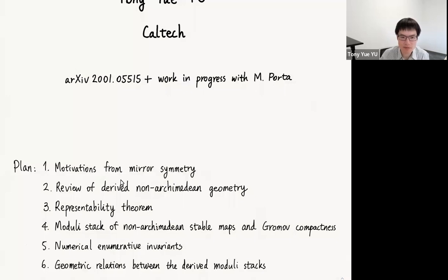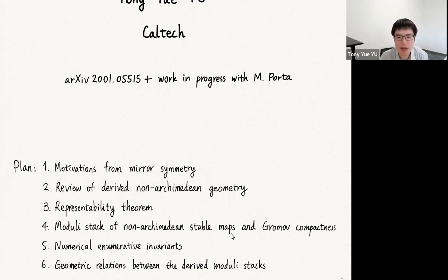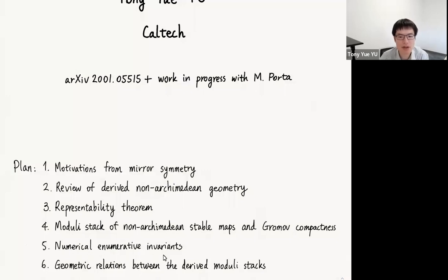Here's the plan of my talk. I will begin with motivations from mirror symmetry — why we consider these non-Archimedean invariants. Then I will give a brief review of derived non-Archimedean geometry, followed by the representability theorem. Then I will discuss the moduli stack of non-Archimedean stable maps and the Gromov compactness theorem. After that I will introduce the numerical enumerative invariants — the numbers we really want to count — and finally explain how properties of the numerical invariants follow from natural geometrical relations between the derived moduli stacks.